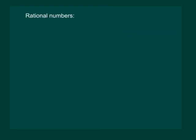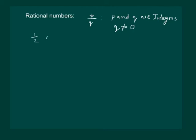Let us recall the definition of rational numbers. A number is said to be a rational number if it can be written in the form p by q, such that p and q are integers and q cannot be 0. That means 1 by 2 is a rational number, 3 by 4 is a rational number, and minus 2005 by 2006 is also a rational number. Also, all integers are rational numbers — for example, 25 can be written as 25 by 1, so it is also a rational number.